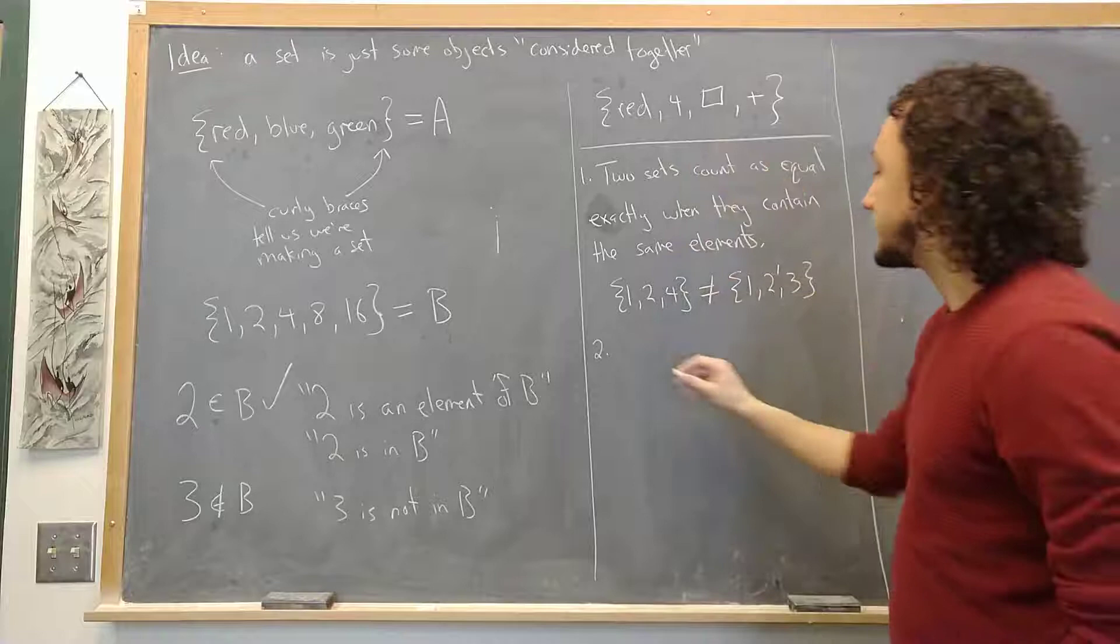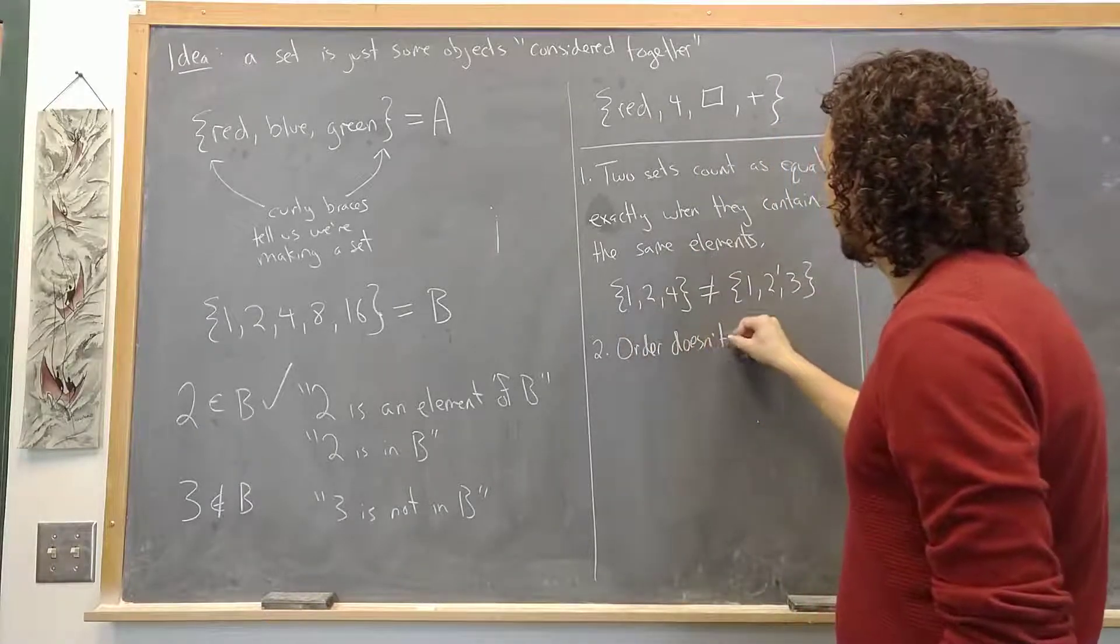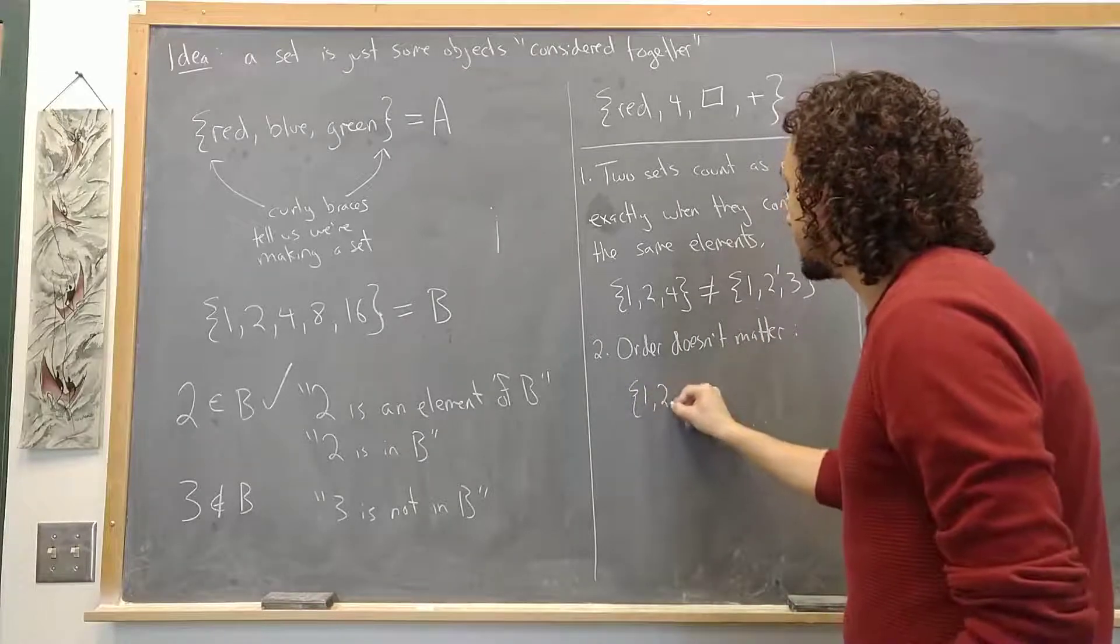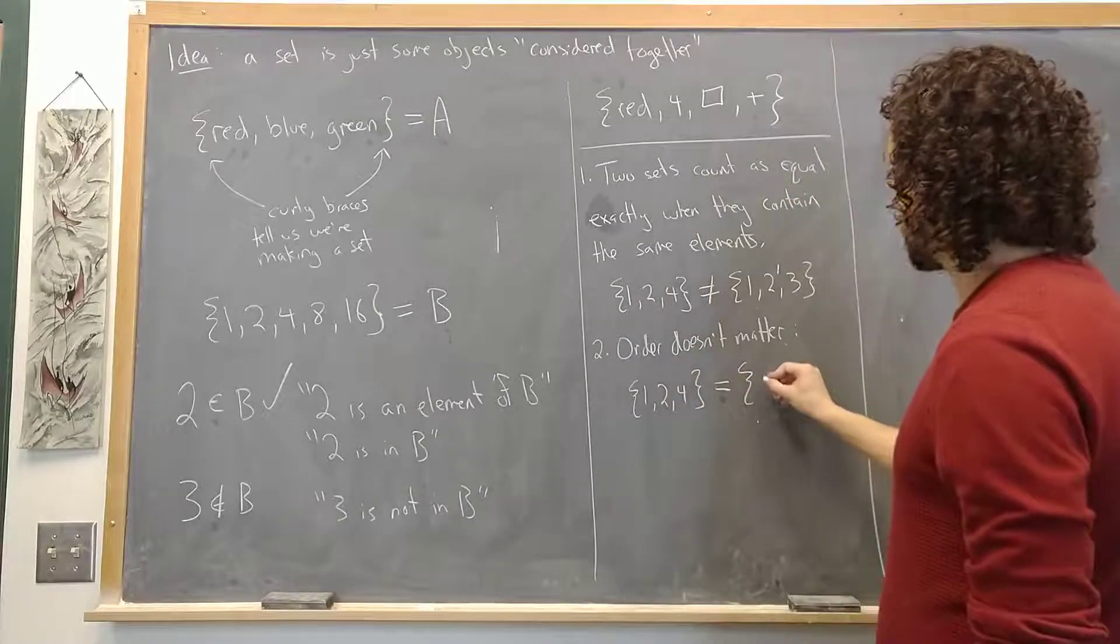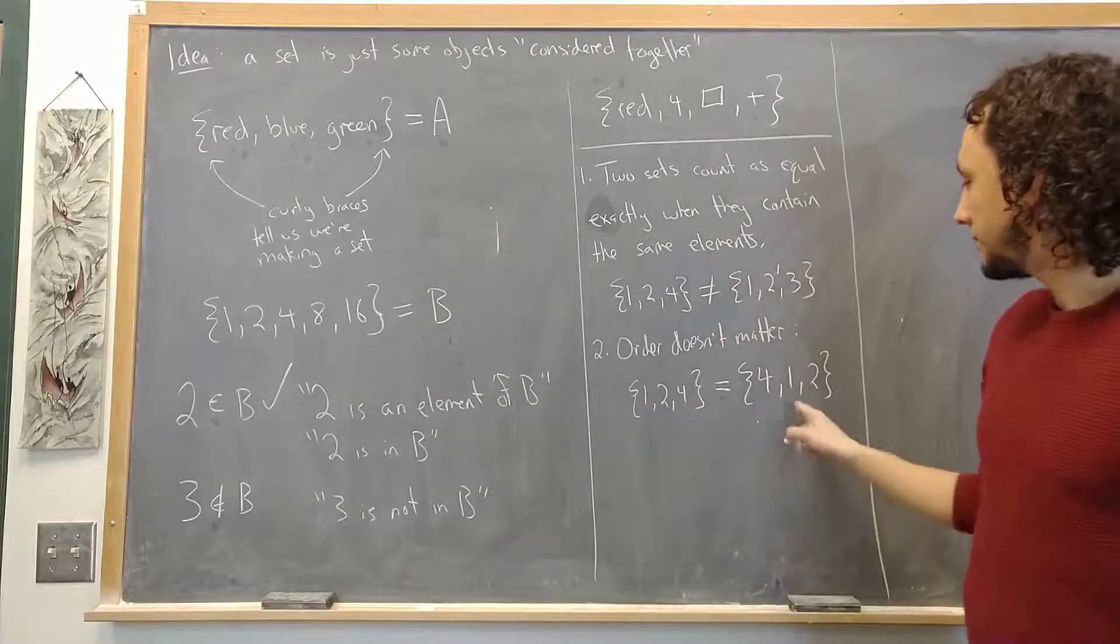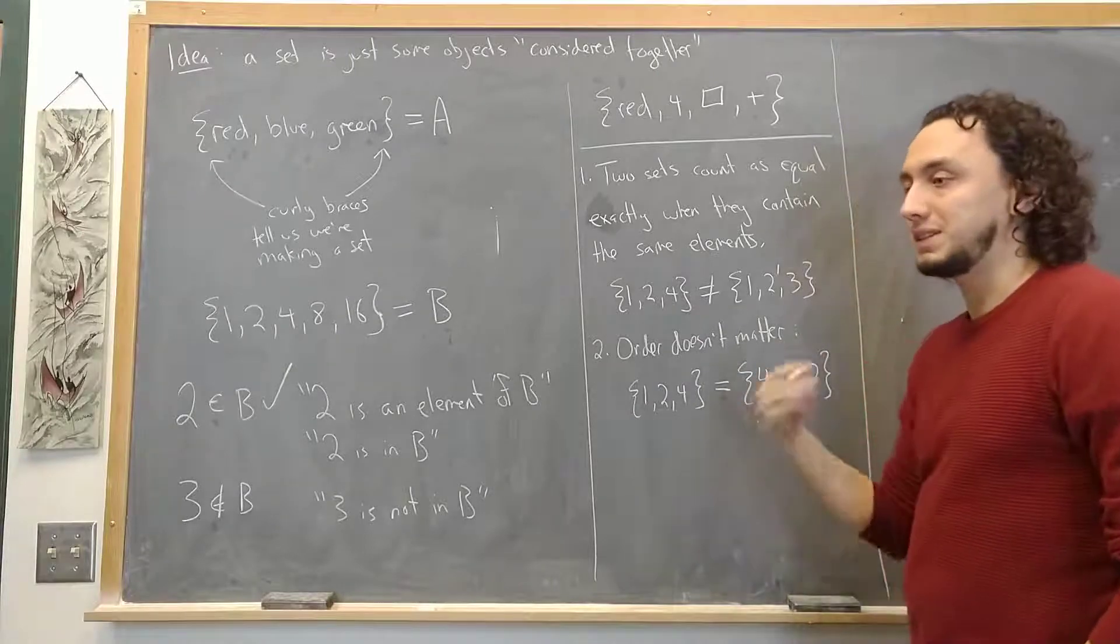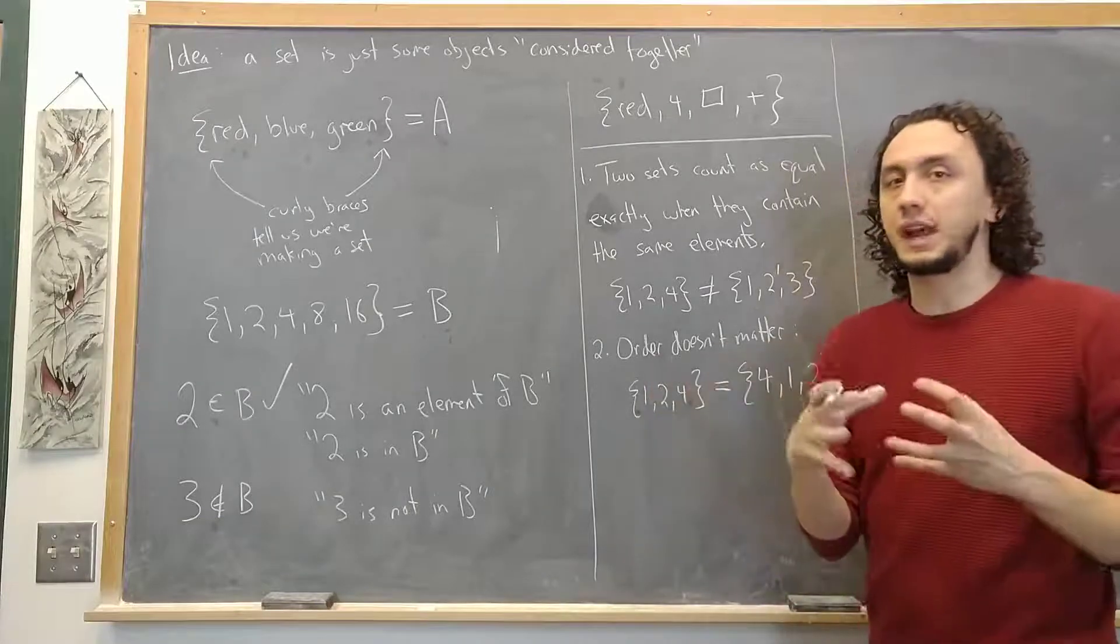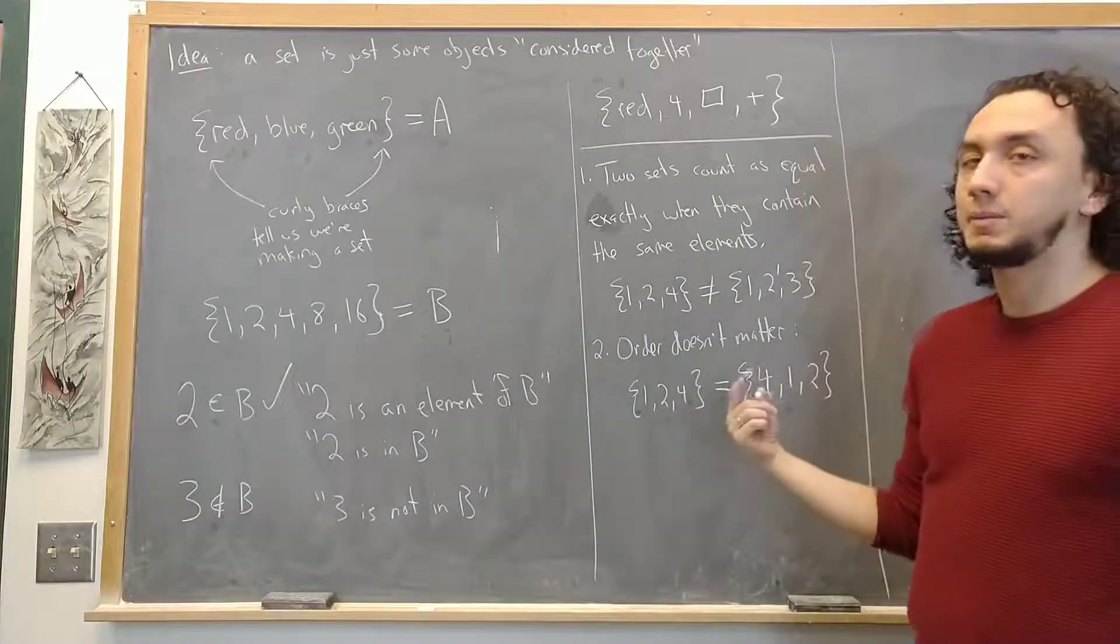An important related point to this is that order doesn't matter. In other words the set that contains the points 1, 2, 4 is equal to the set that contains the points 4, 1, 2. Because the order here is just an artifact of the way I happen to write it down for you but the set itself doesn't keep track of the order. The set is just these three things considered together in no particular order. So these count as the same exactly because they contain the same elements.